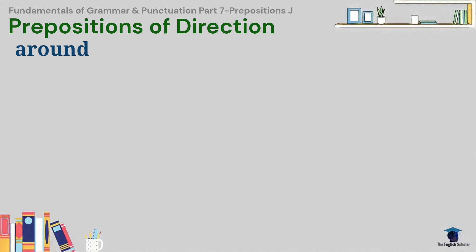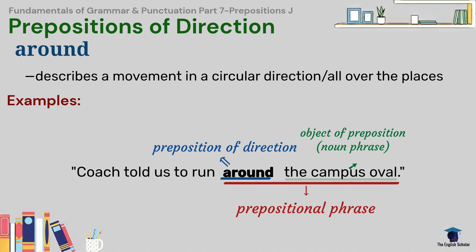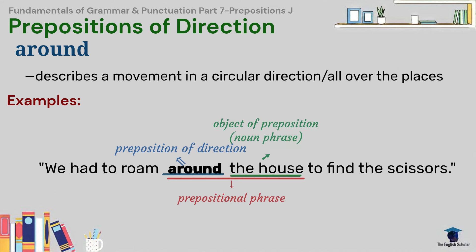Around describes a movement in a circular direction. For example, Coach told us to run around the campus oval. We had to roam around the house to find the scissors.